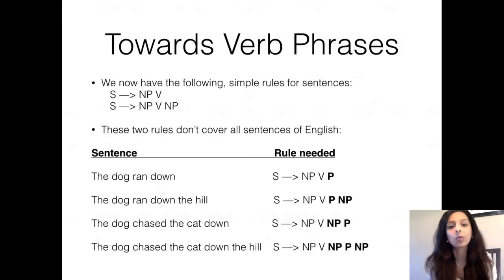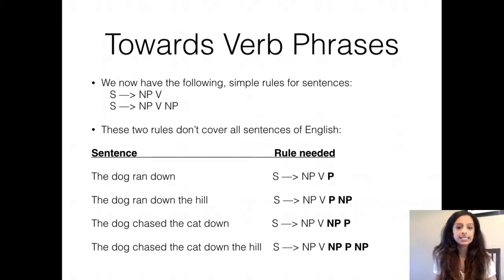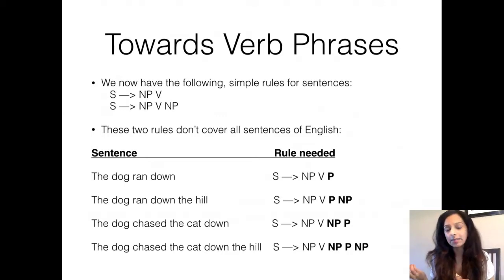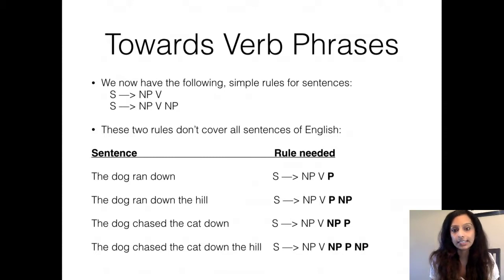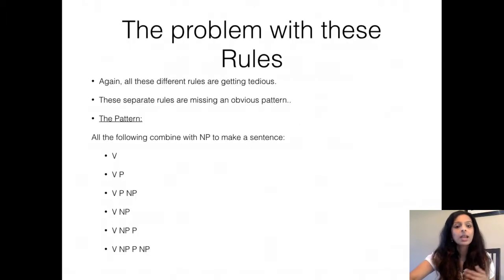Today we are going to see if we can form phrases with verbs as well, just like we identified the noun phrase of English — which could be just a noun, a determiner and a noun, an adjective and a noun, or a determiner, adjective, and a noun. Here are some sentences that cannot be covered by just the two sentence rules we have so far: S goes to a noun phrase and a verb, and S goes to NP, V, and NP. So these sentences are: the dog ran down, the dog ran down the hill, the dog chased the cat down, the dog chased the cat down the hill, etc. You can see things like prepositions such as 'down' appearing after the main verb. We need rules to capture a pattern with respect to the verbs of English.